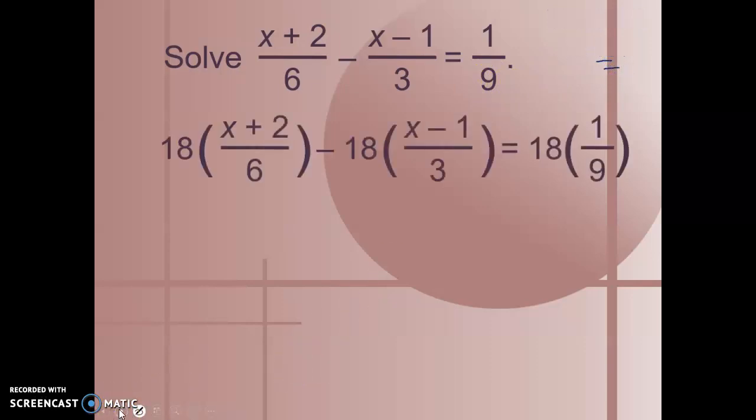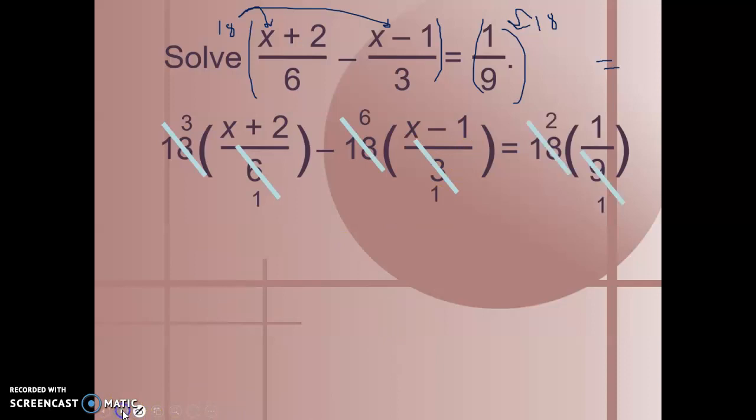We're going to multiply each side by this least common multiple. Imagine that you're doing the distributive property here on both sides. We get 18 times x plus 2 over 6 equals 18 times x minus 1 over 3 equals 18 times 1 over 9. Our 6 and 18 simplify to 3, our 3 and 18 simplify to 6, and our 9 and 18 simplify to 2.